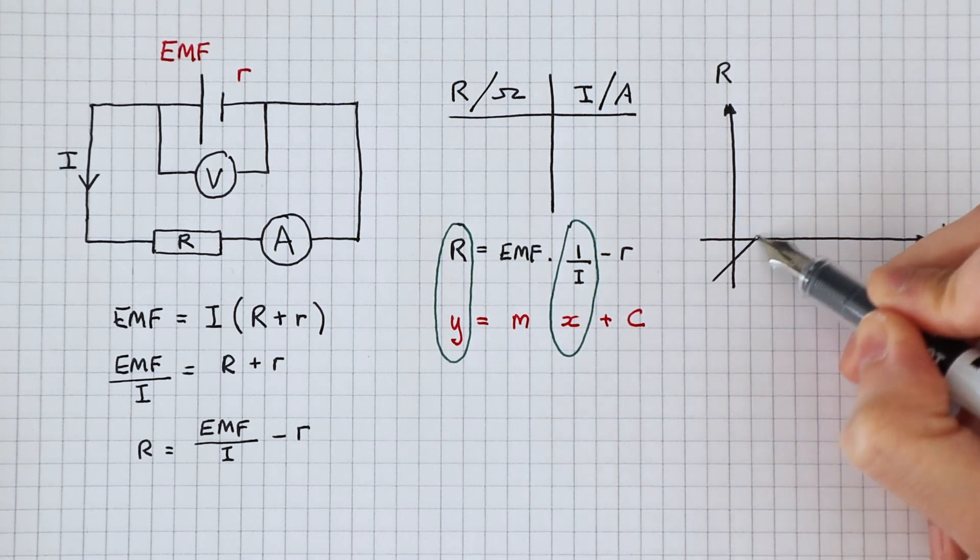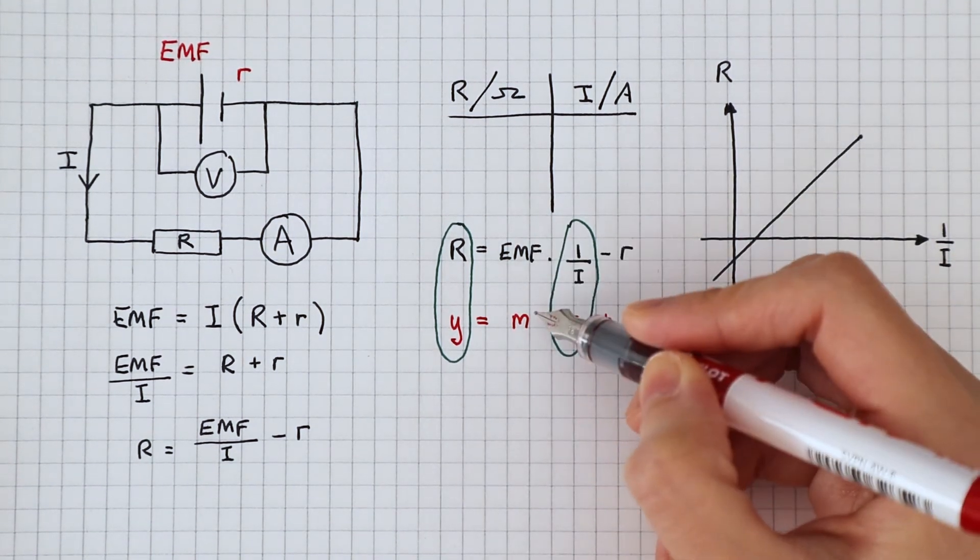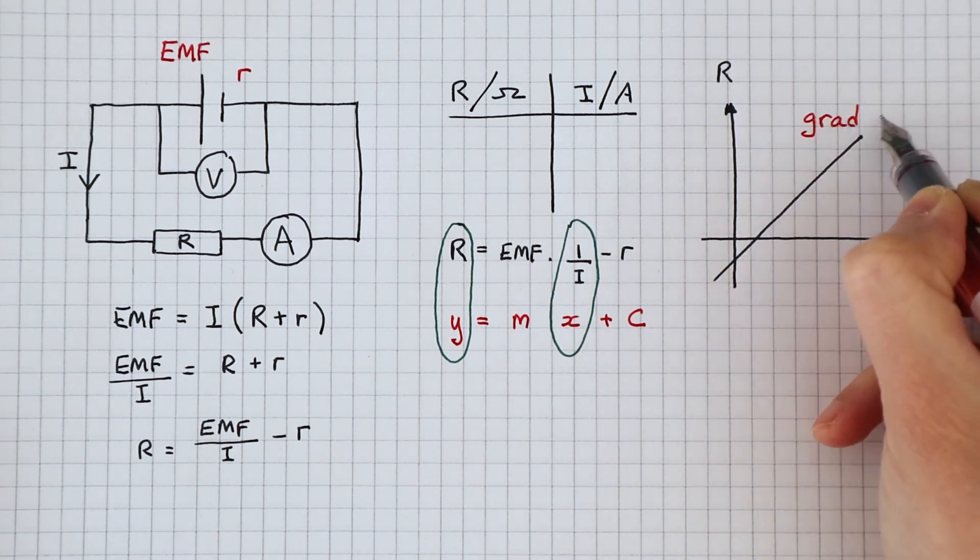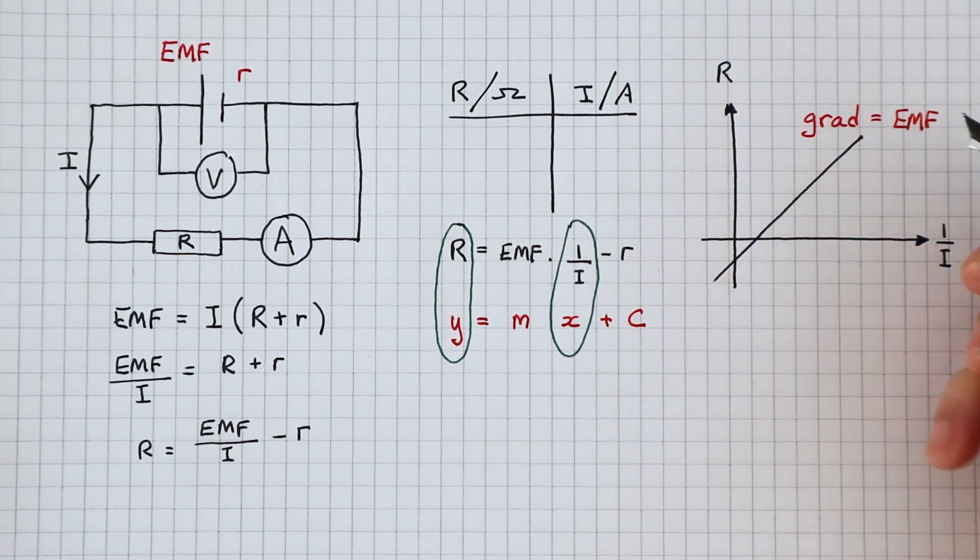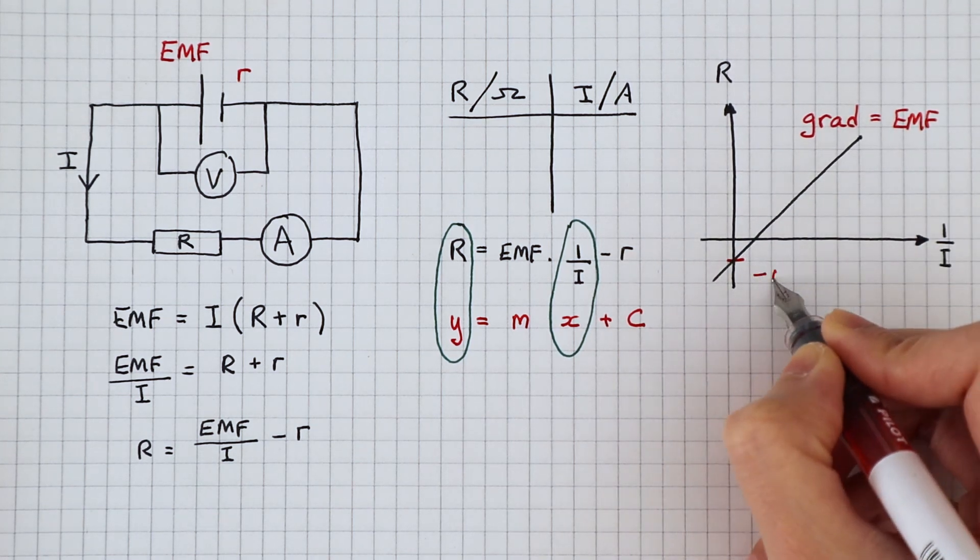You'll find that the graph gives you a straight line like this. The gradient is the EMF. And where it crosses the y axis, we can extrapolate the internal resistance.